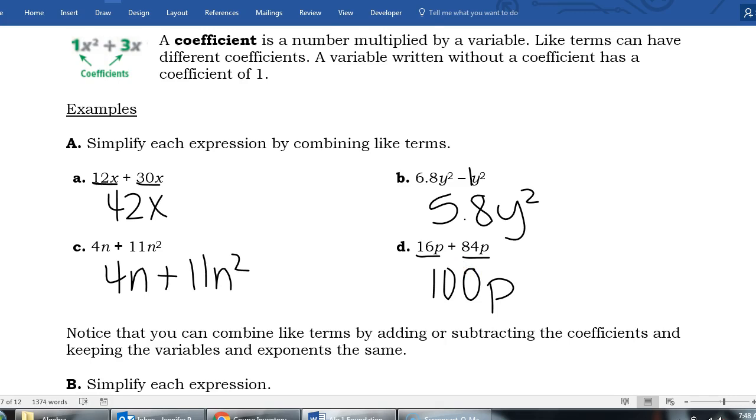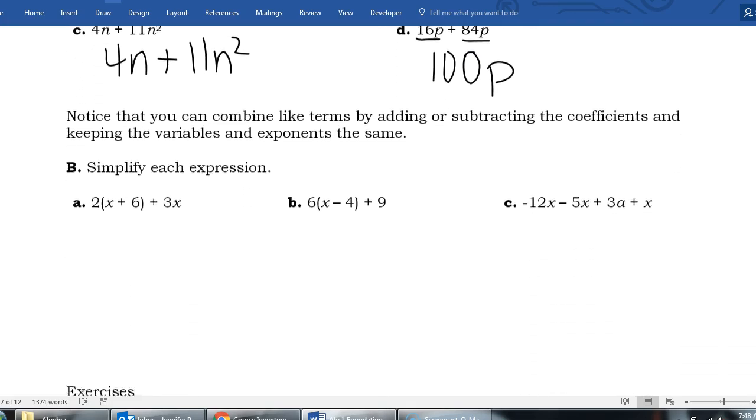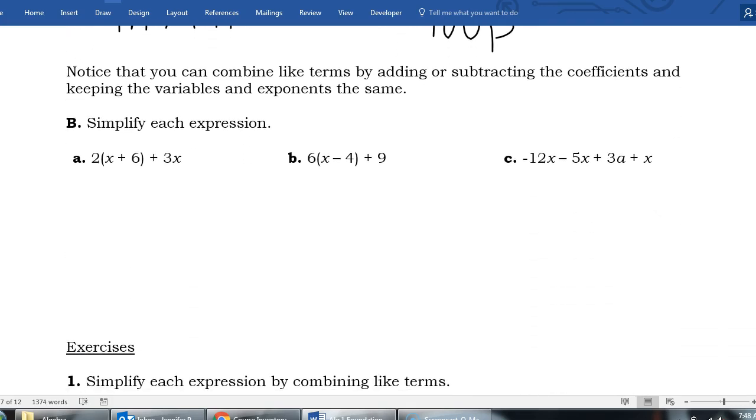Letter B, we're going to combine the distributive property that we did on the page before with the simplifying that we're doing on this page. So we're going to first distribute. That would be 2 times x plus 2 times 6. I'm still writing out all my work. To simplify 2x, that is 2x. To simplify 2 times 6, that is 12.